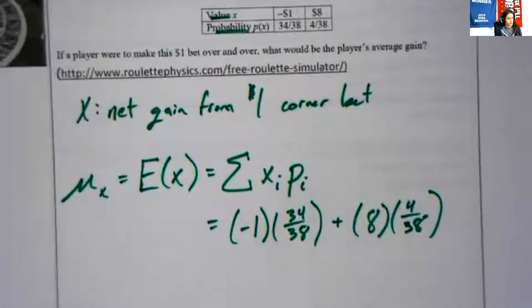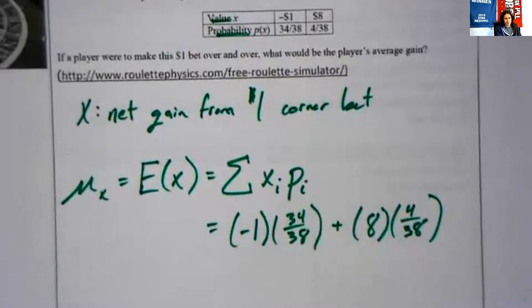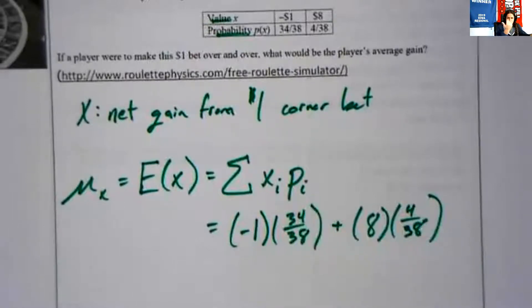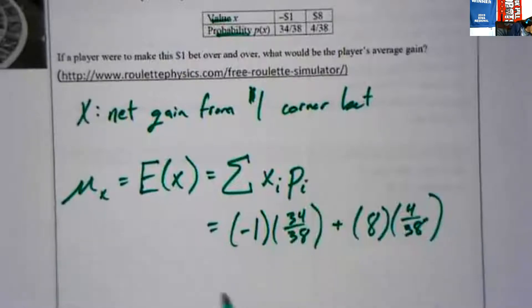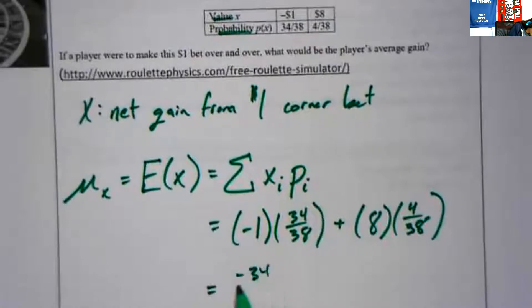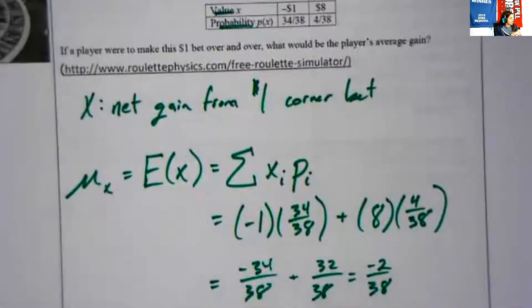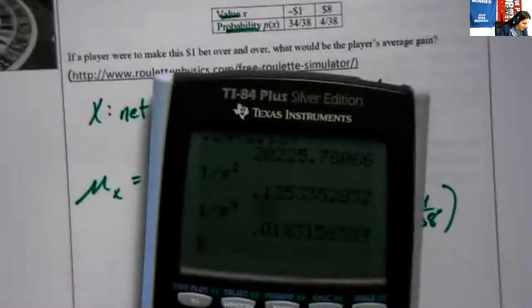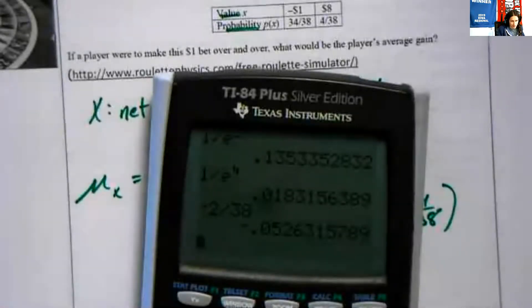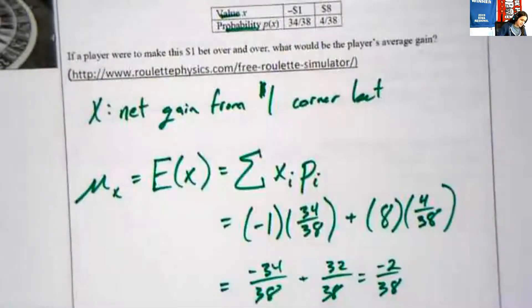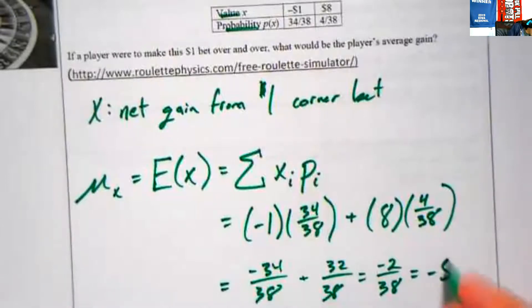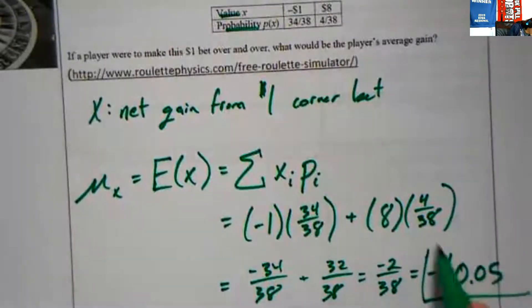You got your corner bet. You got your values that your variable can take and you've got your probabilities. The first thing we need to do is define what our variable is. X is the net gain from a one dollar corner bet. If we wanted to find the mean of X, written as the expected value or expectation of X, what do we need to do? We need to add up the values times their probabilities.